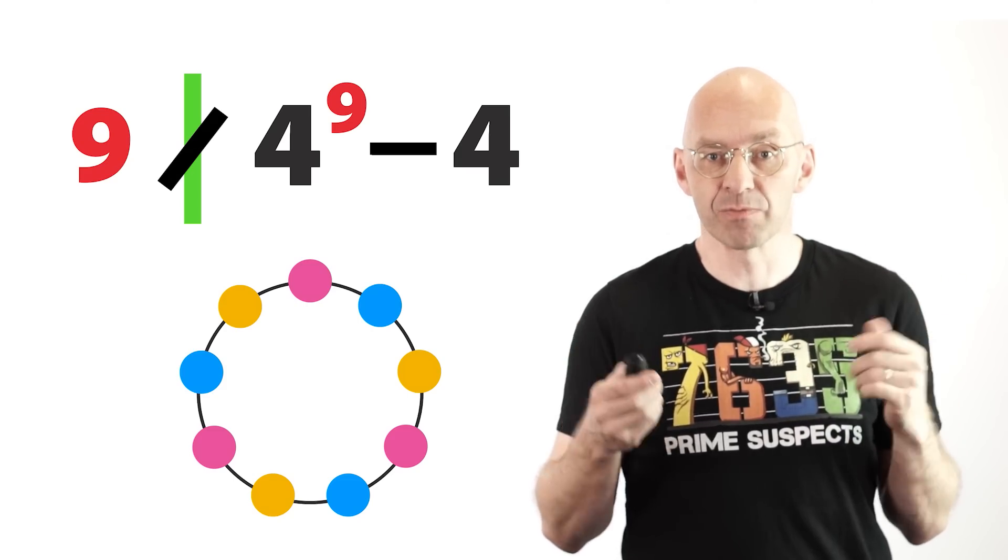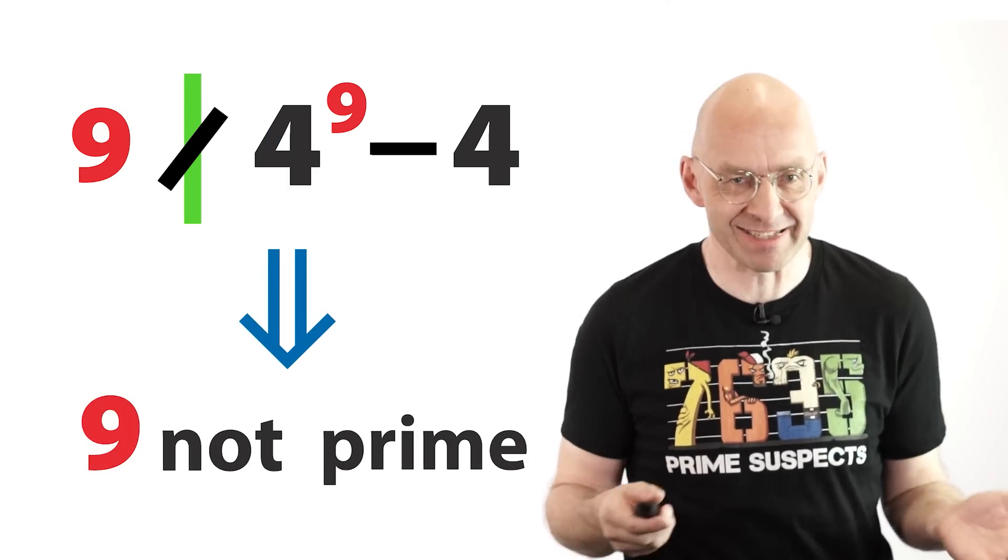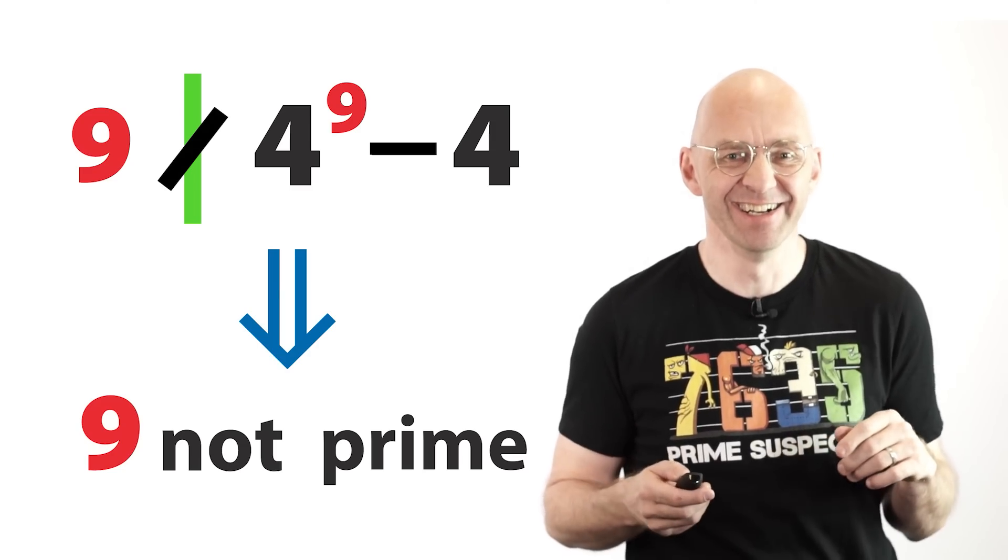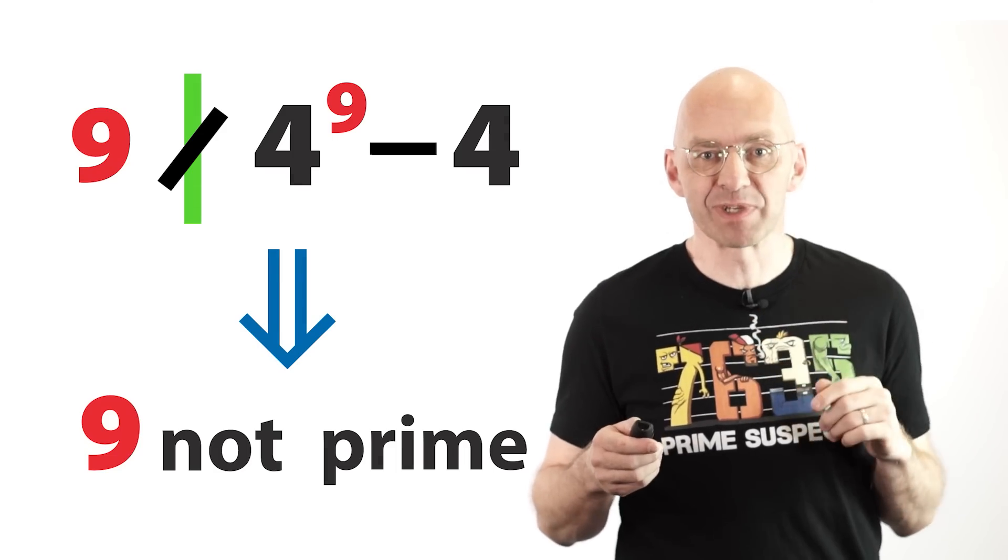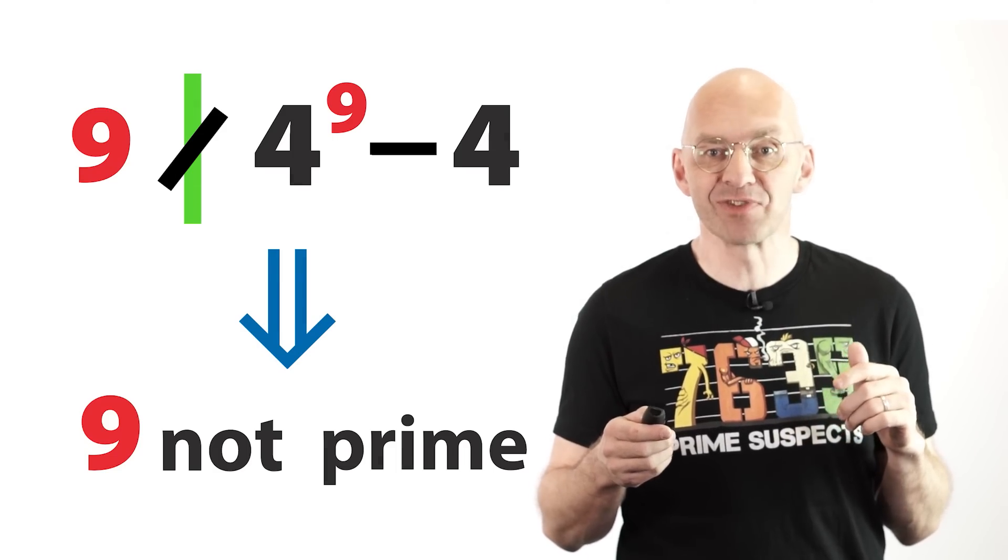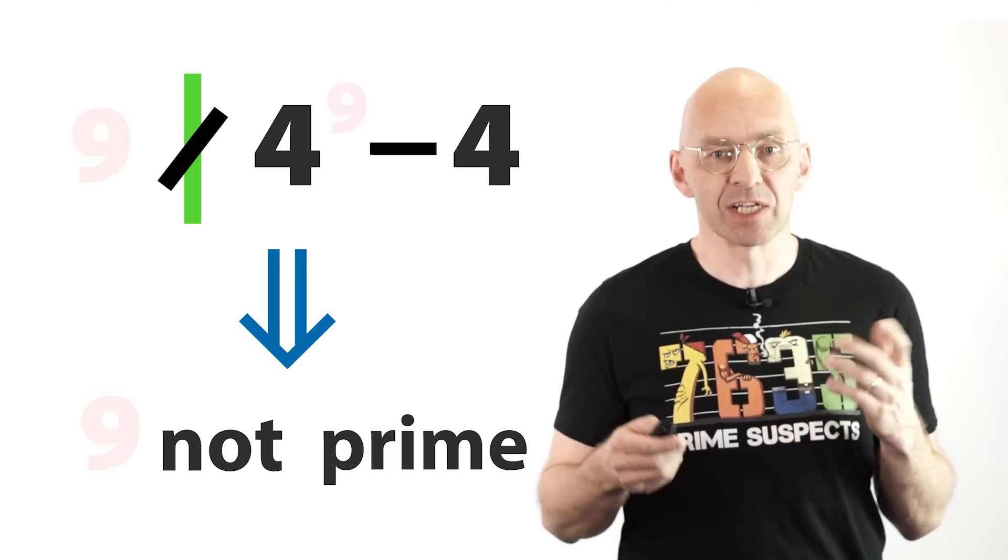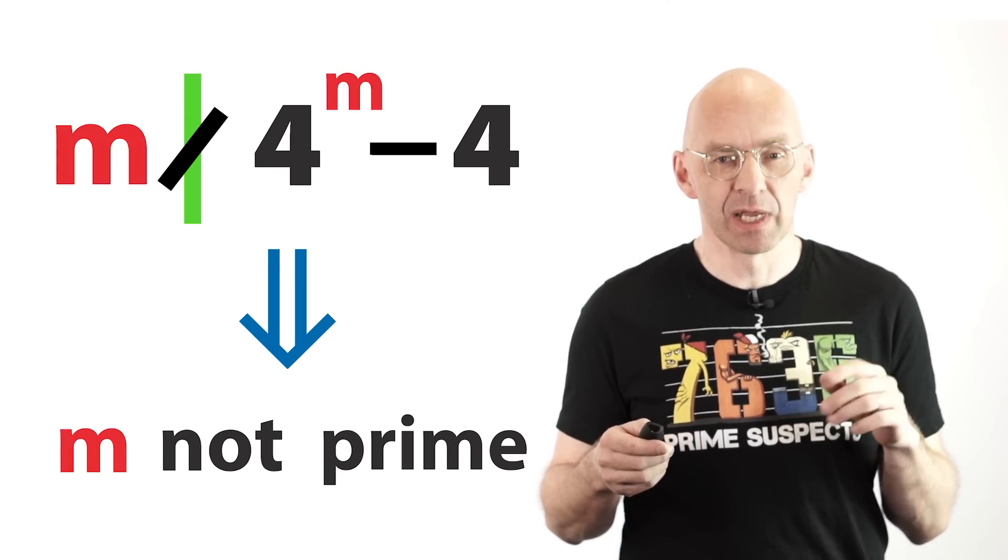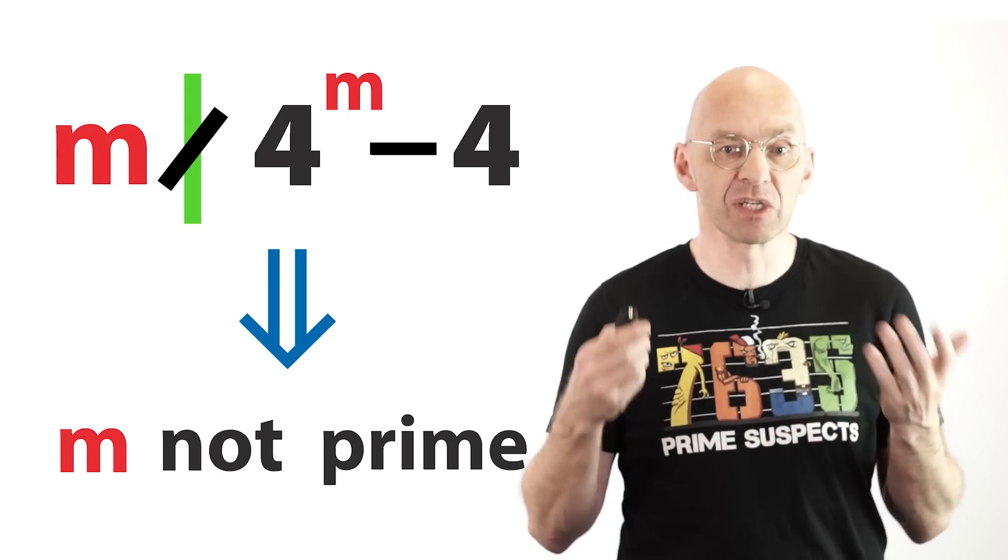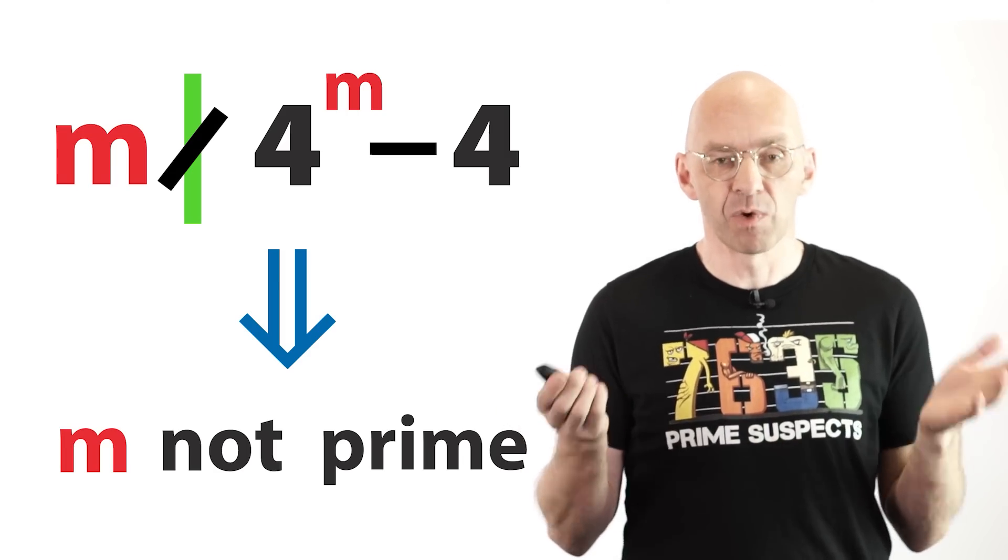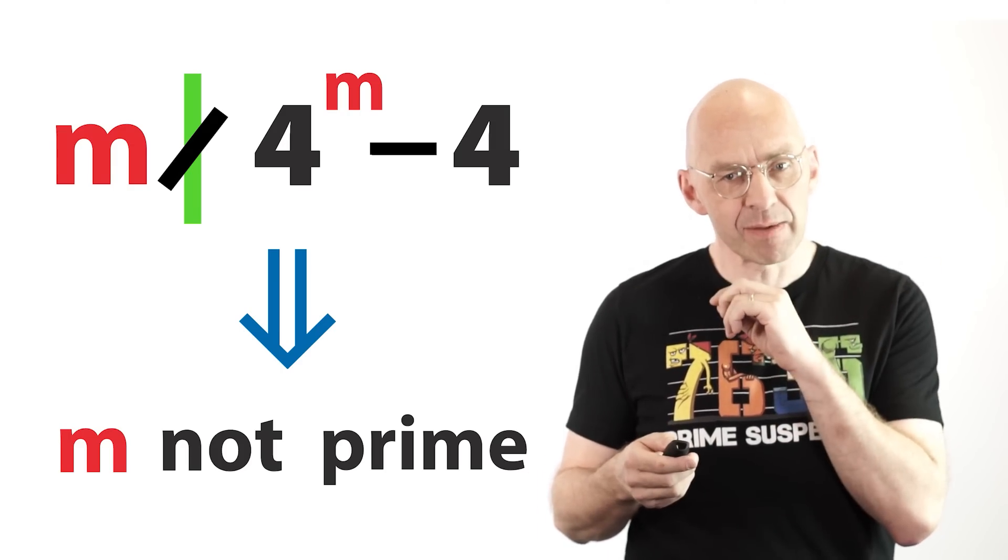So, 9 cannot be a prime. I know. Wow! My god! Incredible! Stop the presses, right? However, what this suggests is that we can investigate whether or not some mystery number m is prime by swapping m for 9 and checking for divisibility. And if the difference on the right is not divisible by m, then m is definitely not prime. On the other hand, what if the difference on the right is divisible by m? Does this guarantee that m is prime?